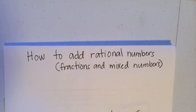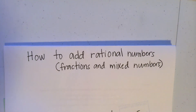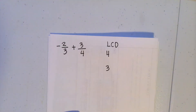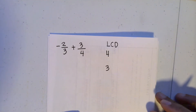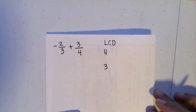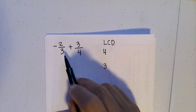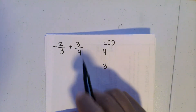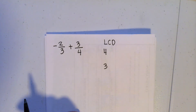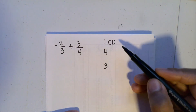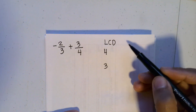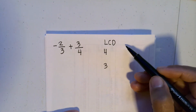In this video, I'm going to show you how to add rational numbers, focusing on fractions and mixed numbers. So let's have the first example. Let's say you have negative two-thirds plus three-fourths. Since the denominators are different, first we have to make the denominators the same, and we can do that by finding the LCD, or the least common denominator.